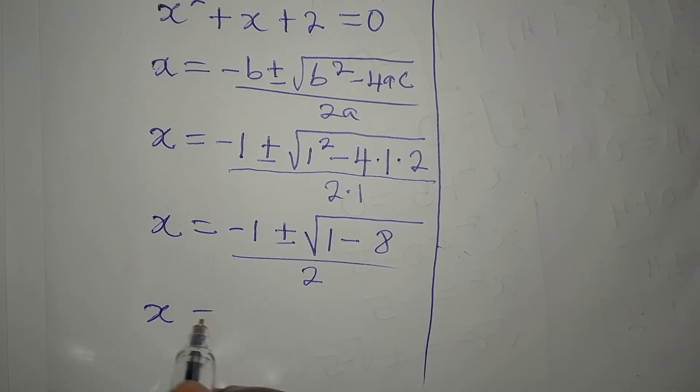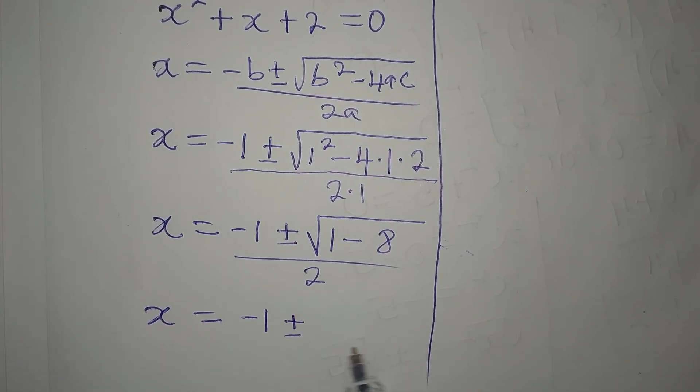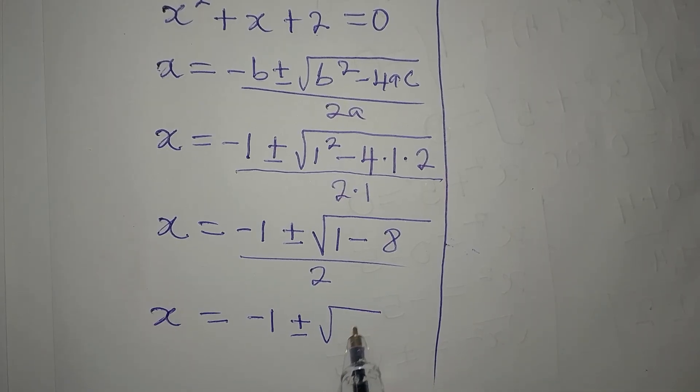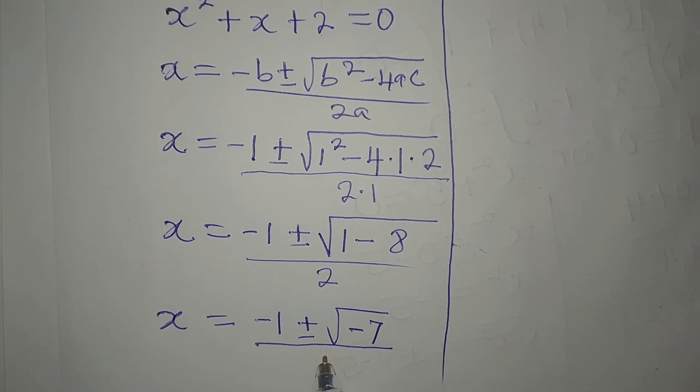Now, x from here is equal to minus 1 plus or minus the square root of 1 minus 8, that is minus 7, divided by 2.